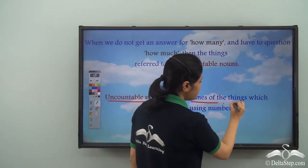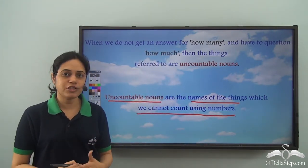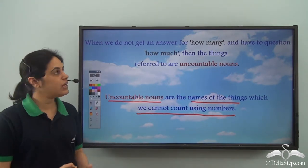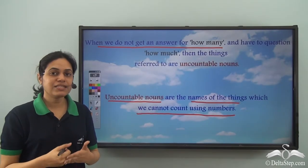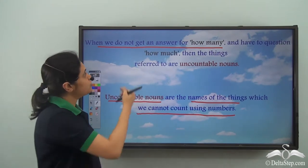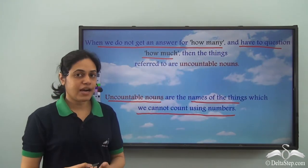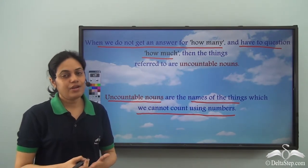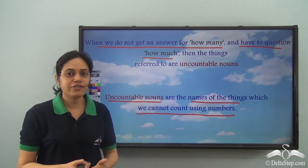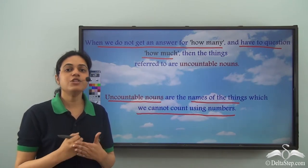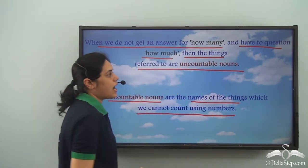Uncountable nouns are the names of things which we cannot count using numbers, like rice and milk. How do we identify uncountable nouns? When we do not get an answer for 'how many' and have to question 'how much' instead. If I ask you 'how much rice is there,' then you will be able to answer that there is 200 grams of rice, 500 grams of rice, 1 kg of rice, and so on. When we get an answer for 'how much,' then the things are referred to as uncountable nouns.